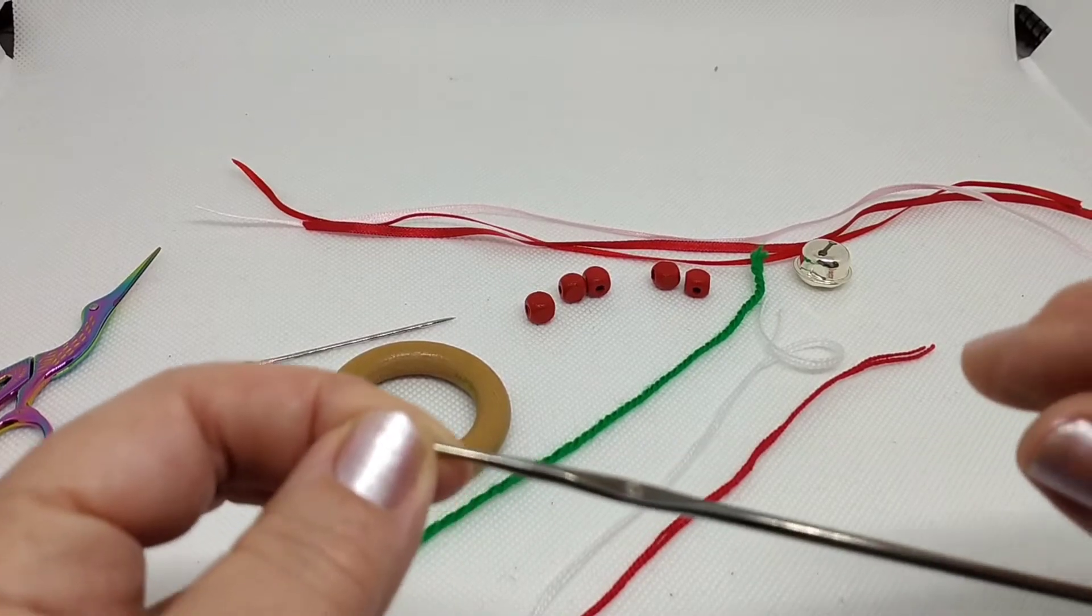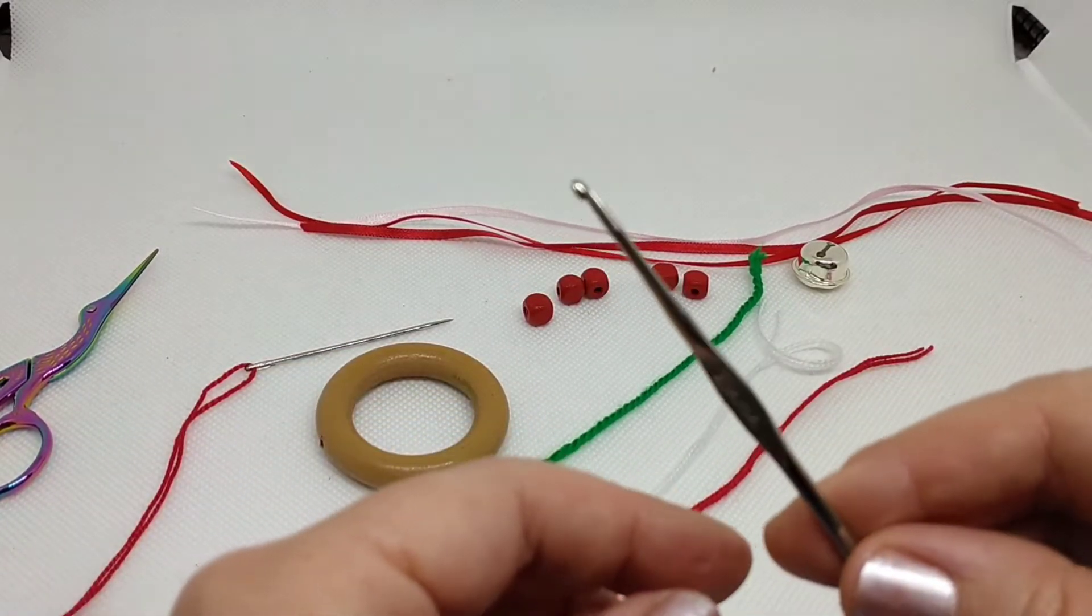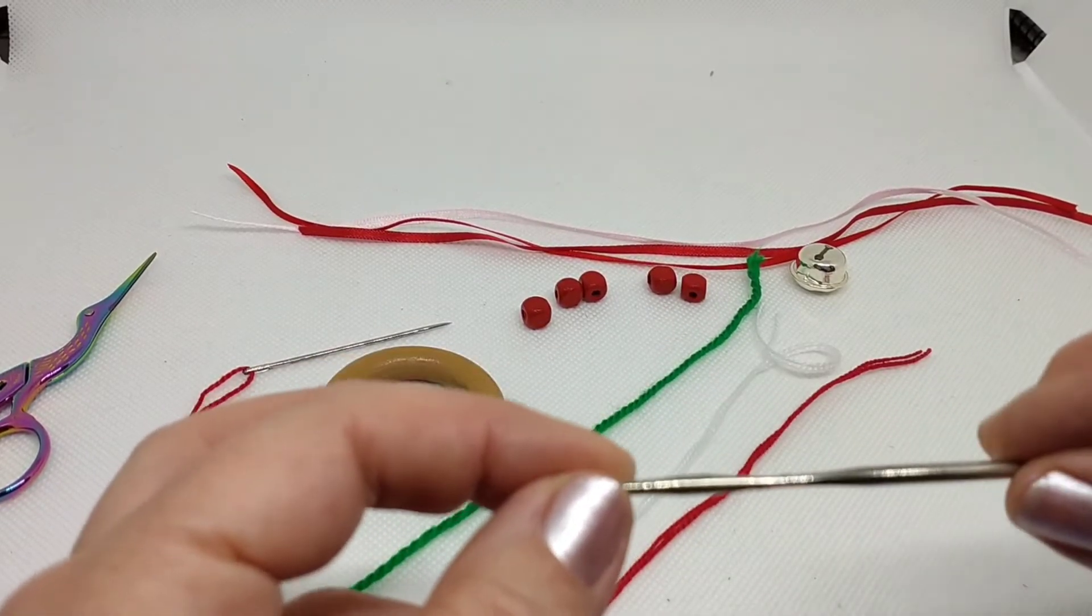Lana de color verde y hilo de algodón blanco y rojo. Y voy a usar una aguja de crochet del número dos. Esta es mi favorita, ya se nota que está desgastadita, pero es que es mi compañera, siempre está conmigo. Así que vamos a empezar.